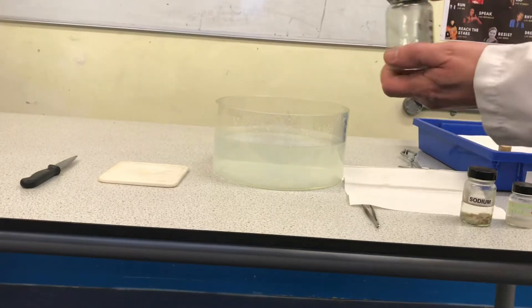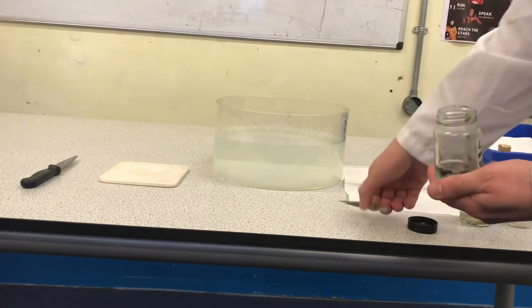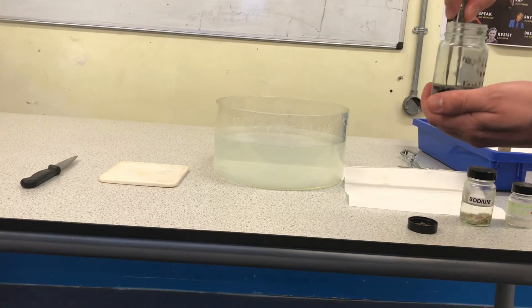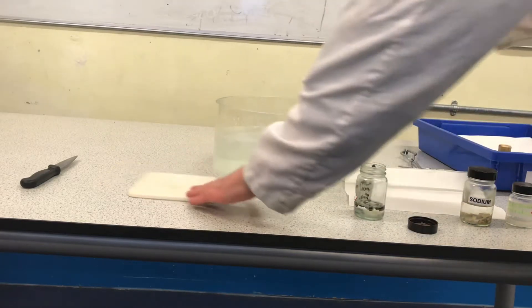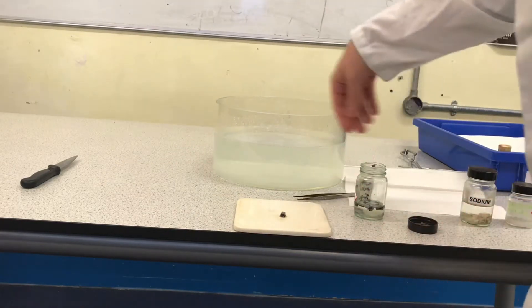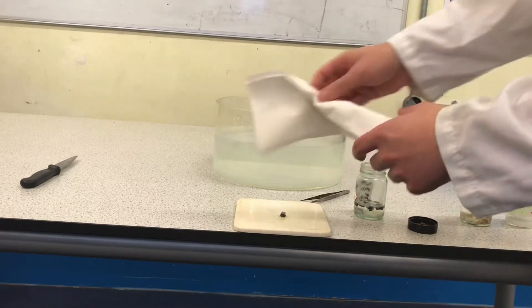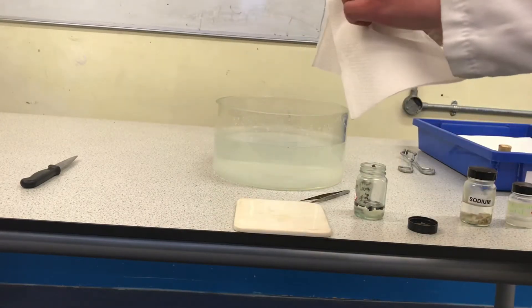I'll remove a piece of lithium with some forceps. Now lithium is a very soft metal, so it can be cut with a knife. But before I cut it, it's important I dry the lithium to remove all of the oil.